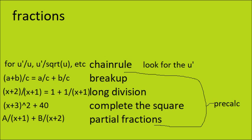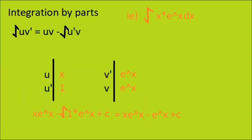If you try to integrate a fraction, you have to manipulate it to make it easier most of the time. You can either try chain-rolling it, breaking it up, long division, completing the square, or partial fractions. You should know how to do most of these from pre-calculus. For integration by parts, the integral of u v prime is equal to u v minus the integral of u prime v. Use a table for this to make it much easier.